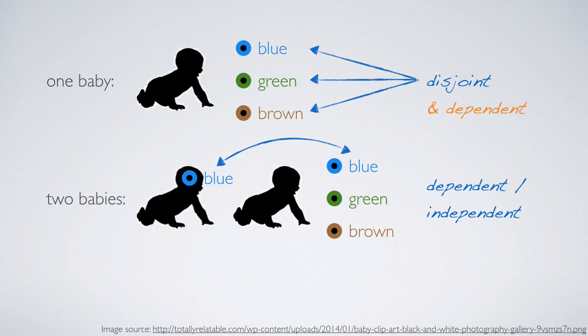One last item to note is that the disjoint outcomes, the color of one baby's eyes, blue, green, or brown, are also dependent on each other. Because if we know that the baby has blue eyes, we also know that it doesn't have green or brown eyes. We can generalize this to say that disjoint events with non-zero probability are always dependent on each other. Because if we know that one happened, we know that the other one cannot happen.